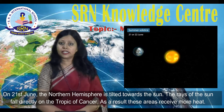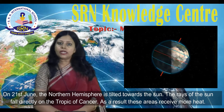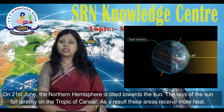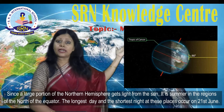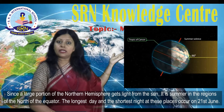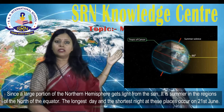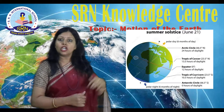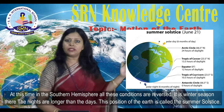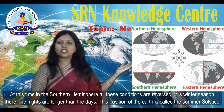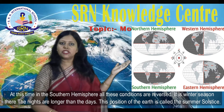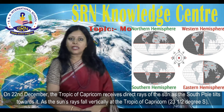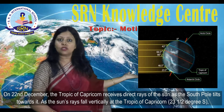On 21st June, the northern hemisphere is tilted towards the Sun. The rays of the Sun fall directly on the Tropic of Cancer. As a result, these areas receive more heat. Since a large portion of the northern hemisphere gets light from the Sun, it is summer in this region north of the equator. The longest day and shortest night occur on 21st June. At this time in the southern hemisphere, all these conditions are reversed — it is winter season there, and the nights are longer than the days. This position of the Earth is called the summer solstice.